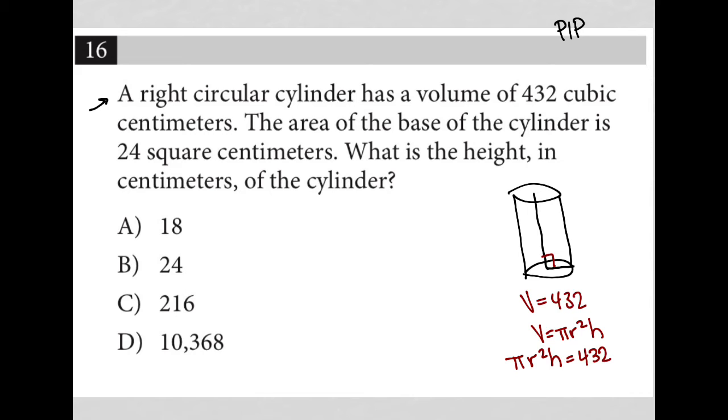Let's keep going and see what happens. The next sentence says the area of the base of the cylinder, which is a circle, is 24 square centimeters. So if this represents the base of the cylinder, we're told that the area is equal to 24. But we know that the area for a circle is pi r squared. So we're saying pi r squared equals 24.